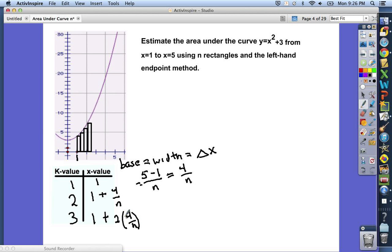If you follow the general pattern here, when k was 1, we really added 0 4 over n's, or 0 widths. When k was 2, we added 1 4 over n, or 1 width, and when k is 3, we added 2 widths.